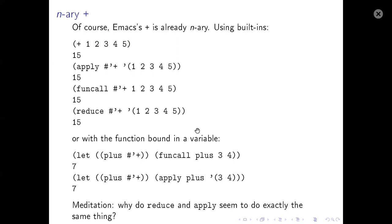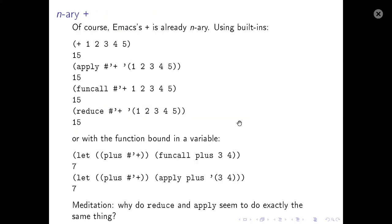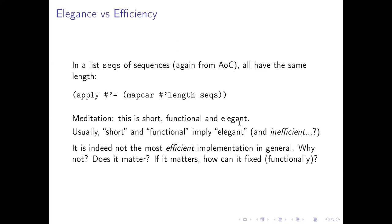If I bind the variable plus to the value of the plus function and type plus inside parentheses like that, the call will fail because it will argue that plus is a variable and not a function name, even though a function is stored in that variable. So you need funcall to make it work. One thing to meditate on: why does reduce seem to do the same as apply here? They appear completely identical — what's the difference? We will get to it later when we return to the reduce function.